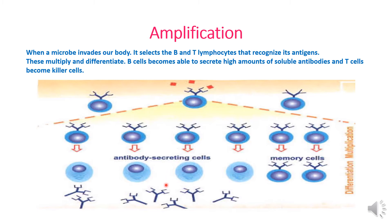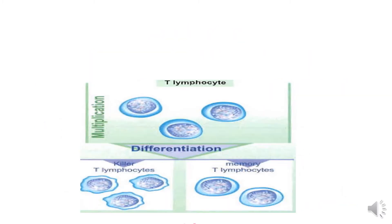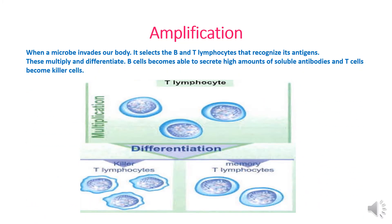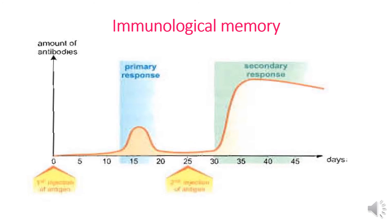The B lymphocyte also keeps some cells in memory for a second attack by the same antigen. So upon a second infection, the B lymphocyte memory cells attack directly. Similarly, T lymphocytes recognize the antigen, multiply, then differentiate into killer T lymphocytes. Some T lymphocytes are also stored as memory T lymphocytes for future infections.